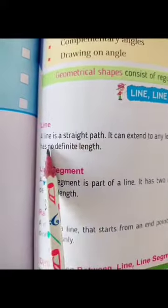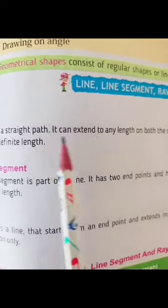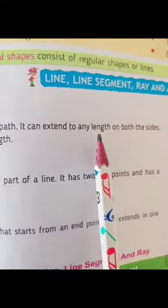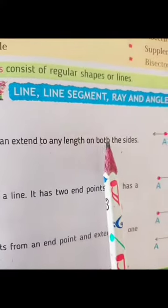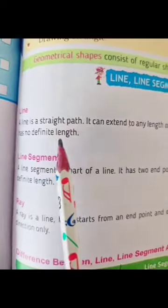What is a line? A line is a straight path. It can be extended to any length on both sides and has no definite length.